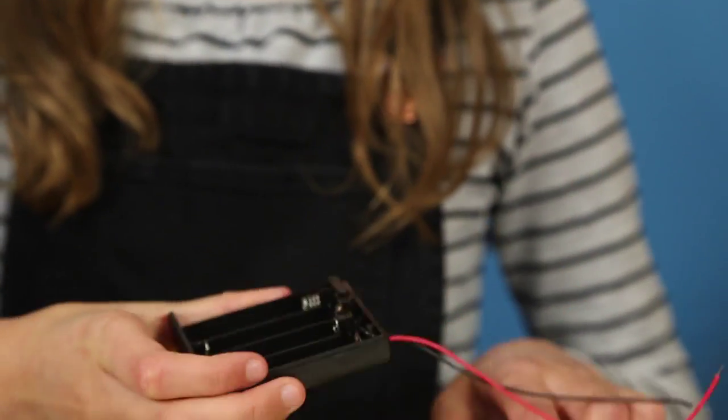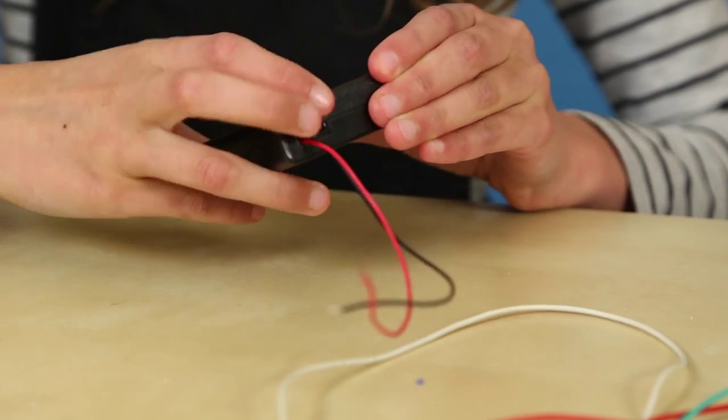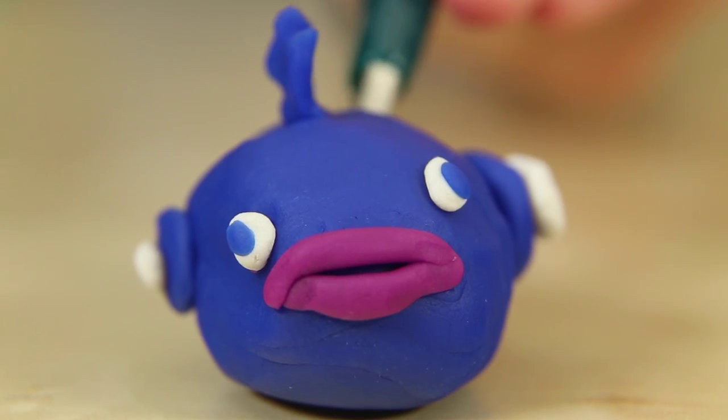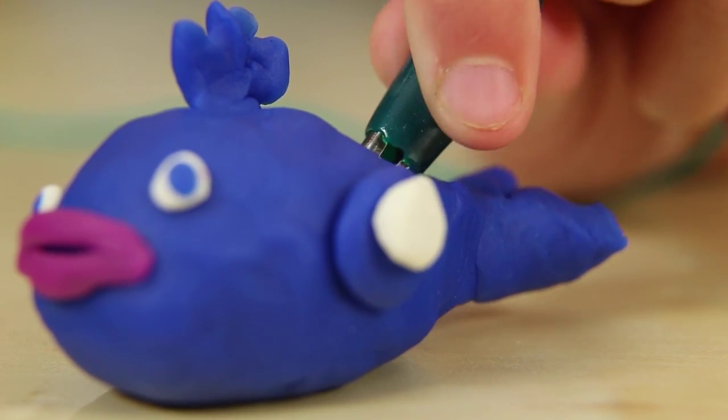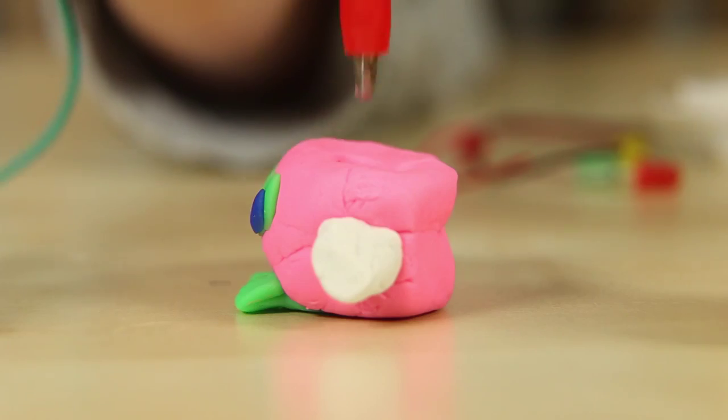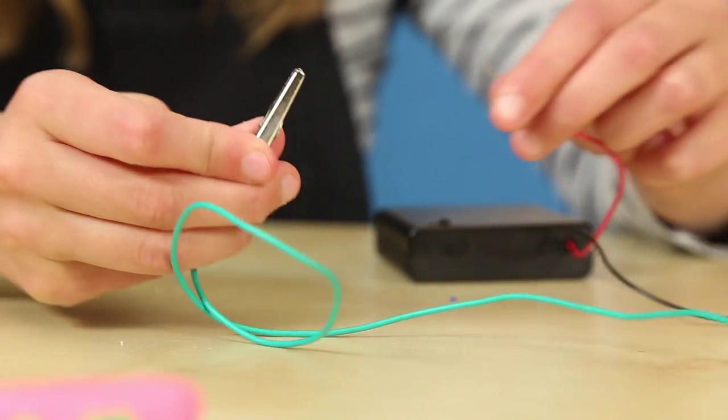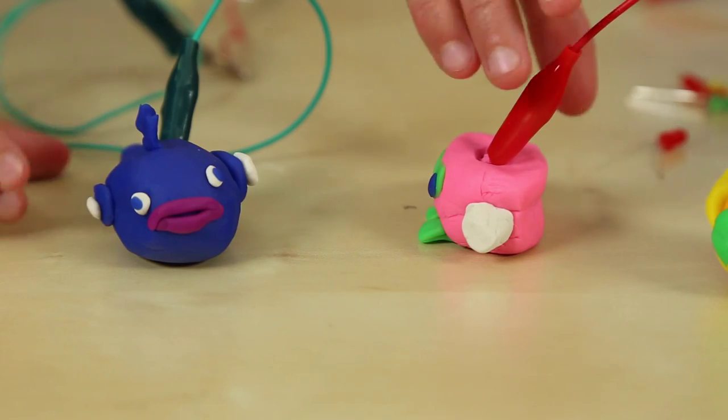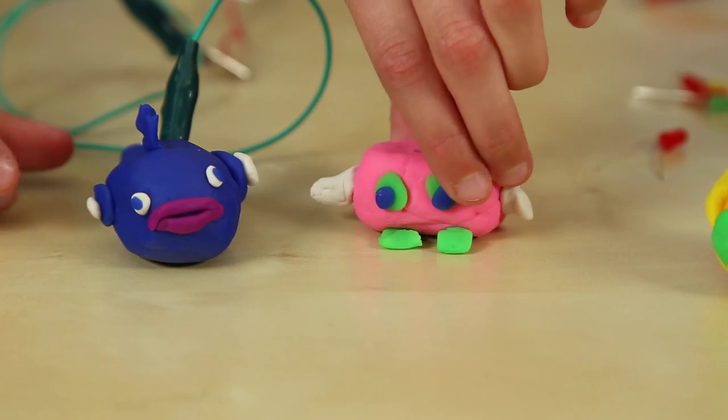Let's get started. Put the batteries into the battery pack and check it is turned on. Take the first crocodile clip. Push one end into the first model. Take the second crocodile clip. Push one end into the second model and clip the other end onto the positive red wire of battery pack.